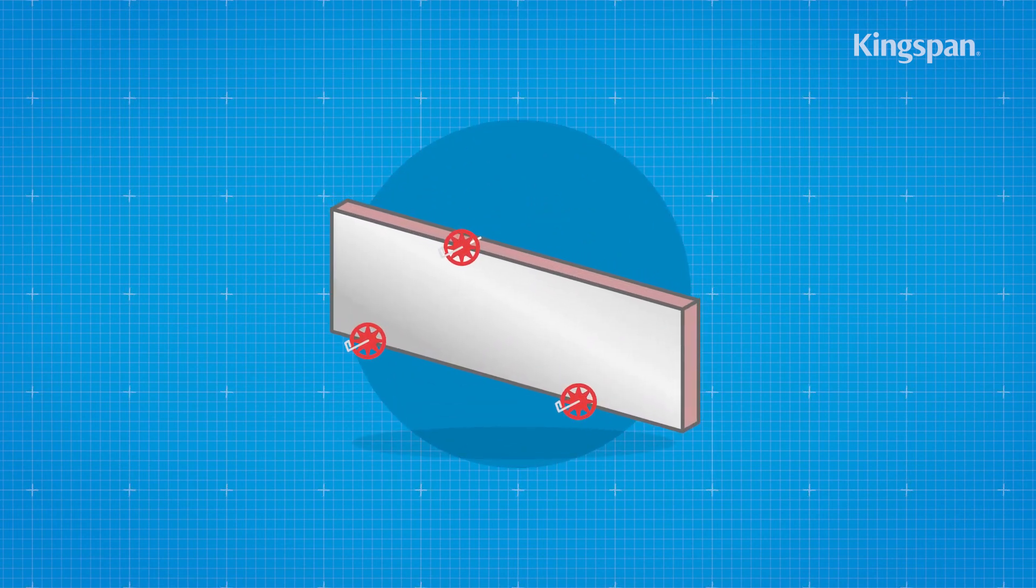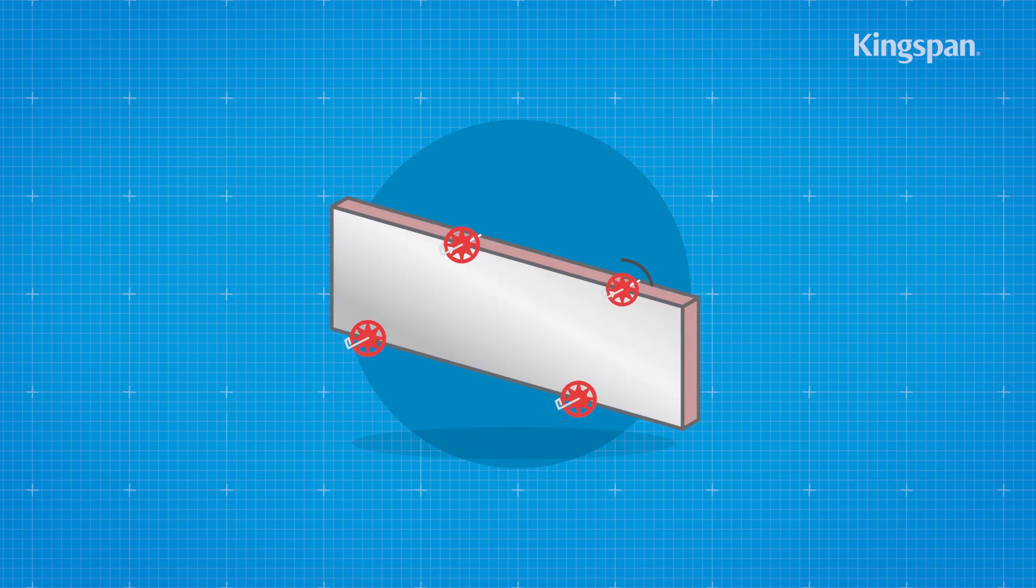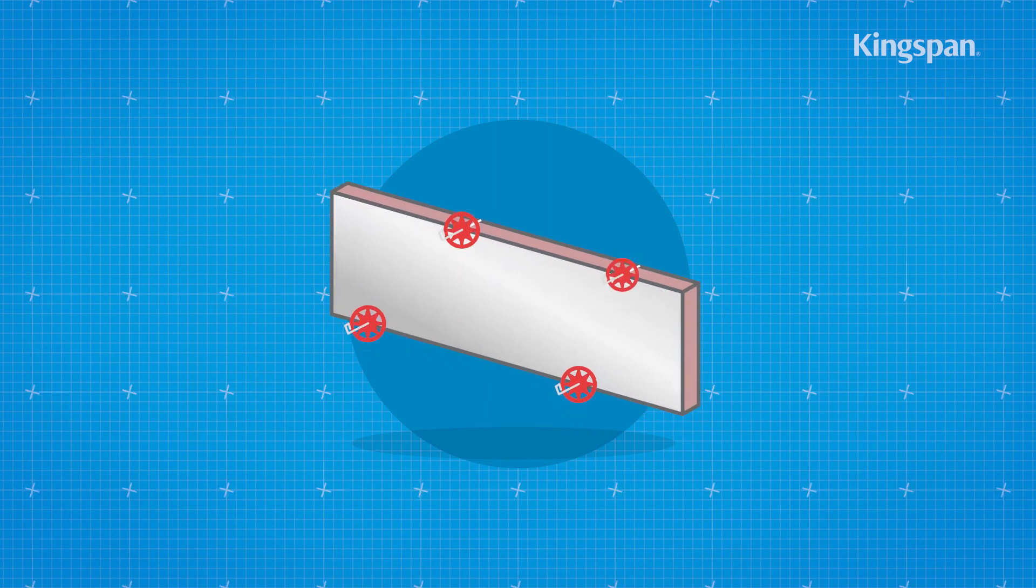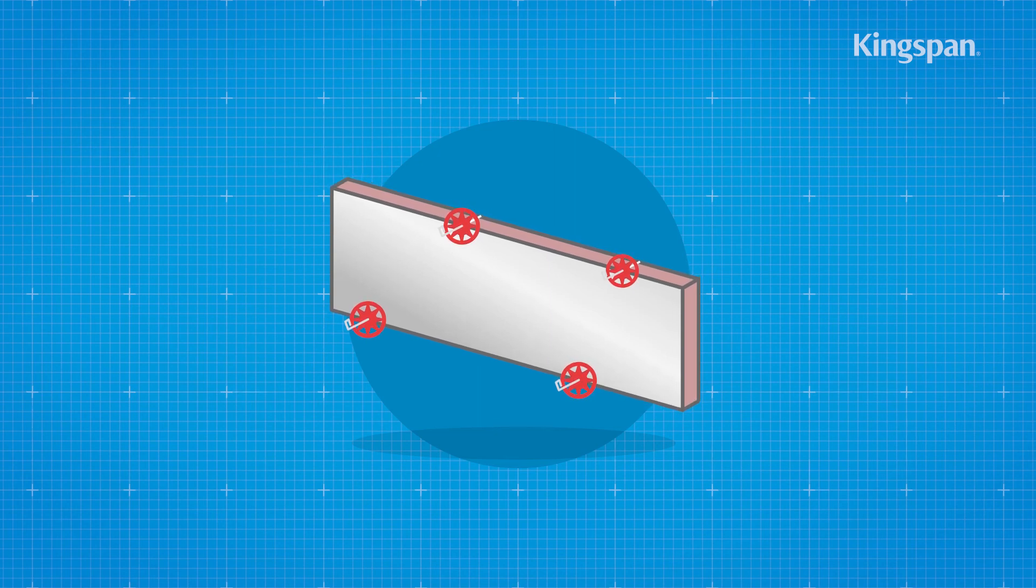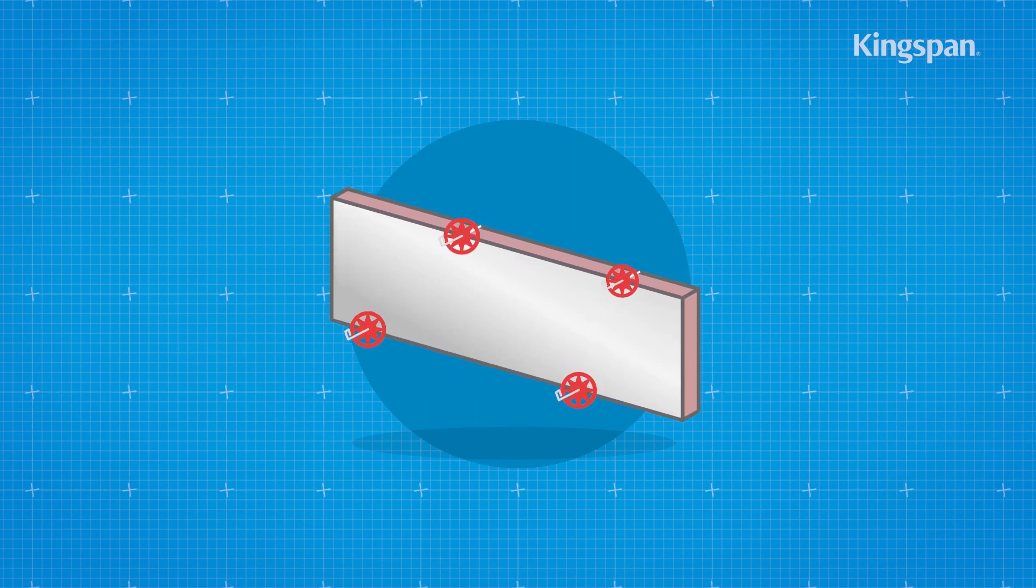Secure each board at a minimum of three points. Additional ties may also be required to satisfy structural requirements or to ensure adequate retention of boards or cut pieces.